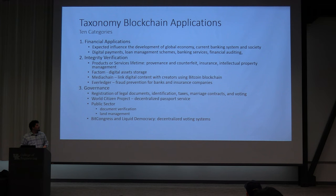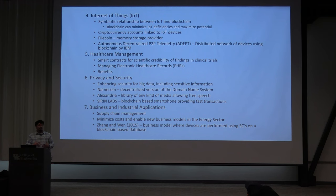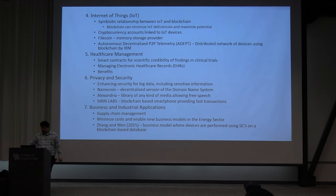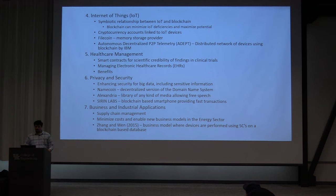They're also starting to use blockchain for voting systems, mentioning things called BigCongress and LiquidDemocracy as decentralized voting systems. The fourth category is Internet of Things - they found a symbiotic relationship between blockchain and IoT. IoT is about appliances connected to the internet that gather data as they work. Because blockchain helps with big data, you can use blockchain to minimize IoT deficiencies and maximize potential. They also mentioned the possibility of linking your cryptocurrency accounts to your IoT devices. IBM had created something called the Autonomous Decentralized P2P Telemetry (ADEPT), which is a distributed network of devices.